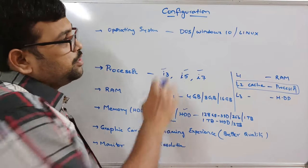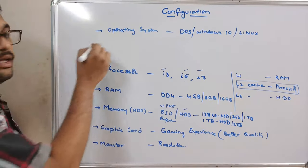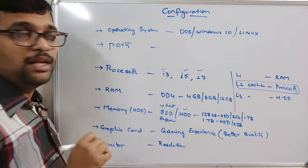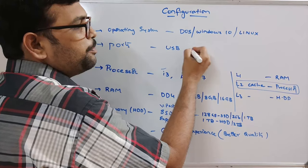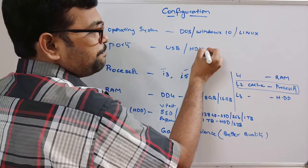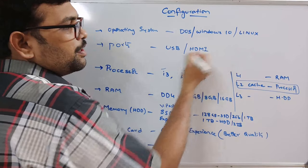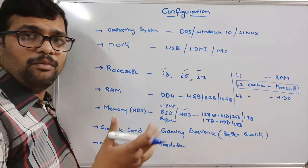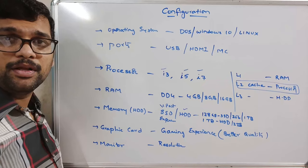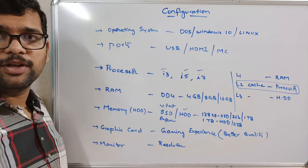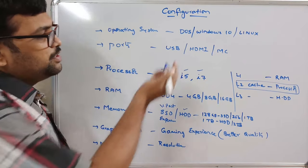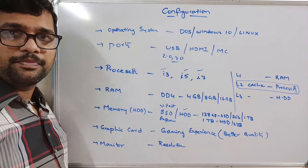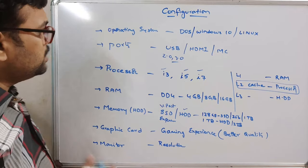Finally, ports are also very important. You should check how many ports are available: how many USB ports, how many HDMI ports, memory card ports, and so on. Also check the speed of those ports — USB can be version 2 or version 3. These are the things to consider before buying any computer or laptop.